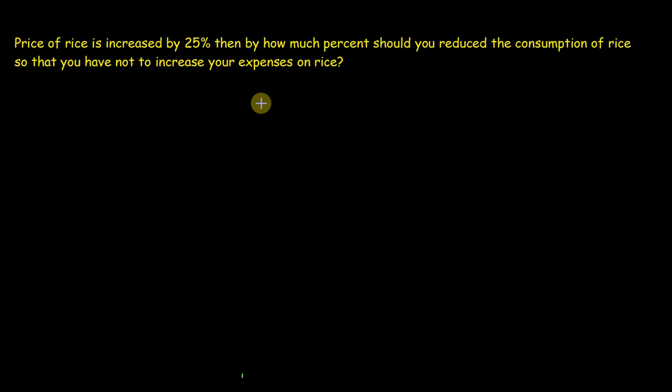We know price multiply by quantity is equal to expenditure. Here price is getting increased and we want our expenditure to be constant, so that means we need to decrease our quantity used. Suppose rice price is 100 and we are using 100 units, so our expenditure is 10,000.